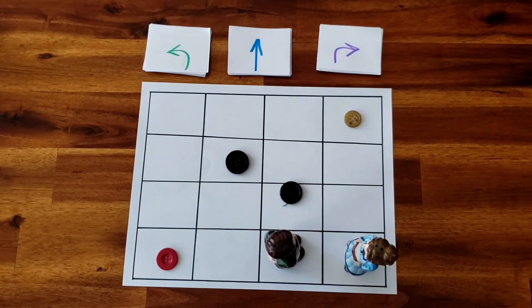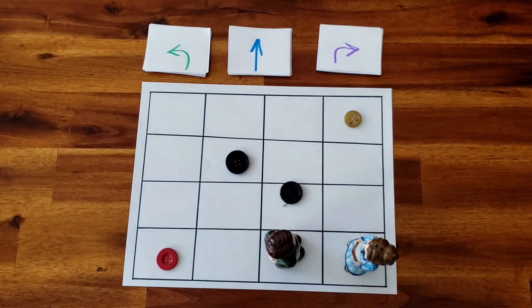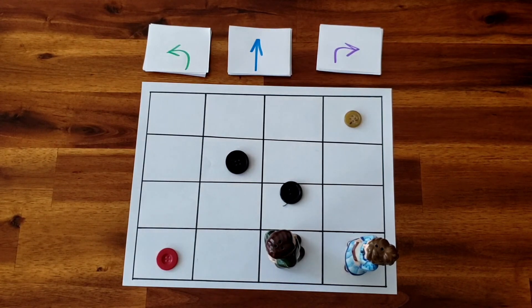This game provides excellent practice for sequencing, which is a really important part of coding, where you're learning how to do those step-by-step instructions. It also helps children get some spatial awareness as they're trying to figure out which way is left and which way is right when it is not their own body that they are relating it to.